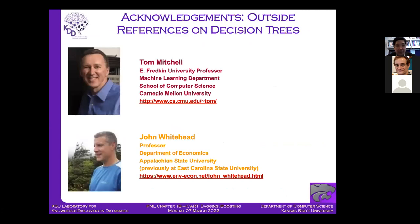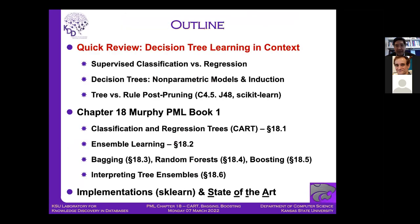I wanted to start by acknowledging outside references on decision trees, mostly Tom Mitchell's book, and I use some notation from his book in addition to the notation Kevin Murphy derives. Most of this lecture follows Kevin's outline of Chapter 18, which has six parts. I'll do a quick review of decision tree learning in context — going over decision trees as a non-parametric model.